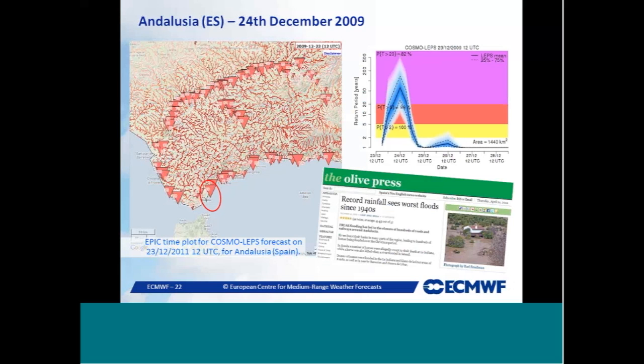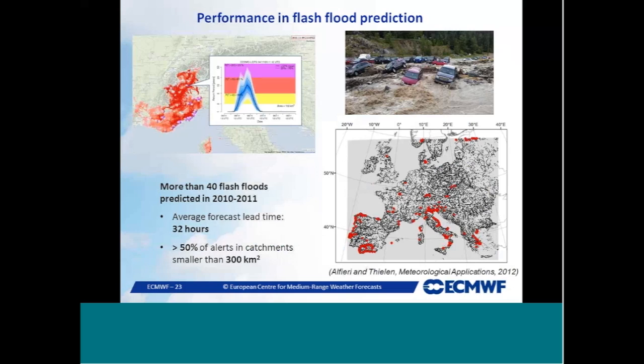EPIC has shown good results in predicting flash floods, though the typical forecast lead time is short — around one to two days, since these events have little predictability. A study from 2012 showed that over two years of forecasts, more than 40 flash floods were predicted with an average lead time of about 32 hours, mostly for catchments smaller than 1,000 square kilometres.